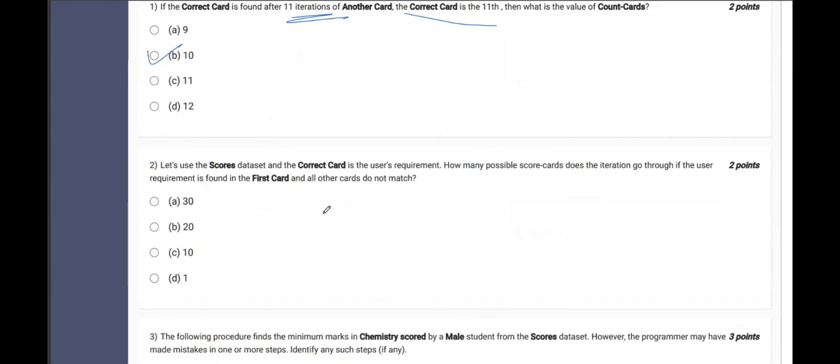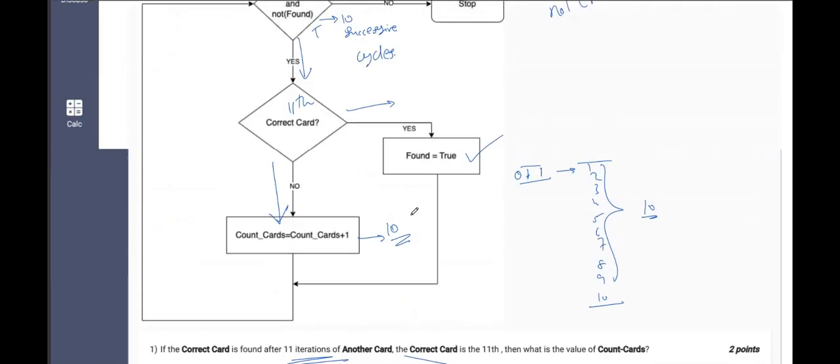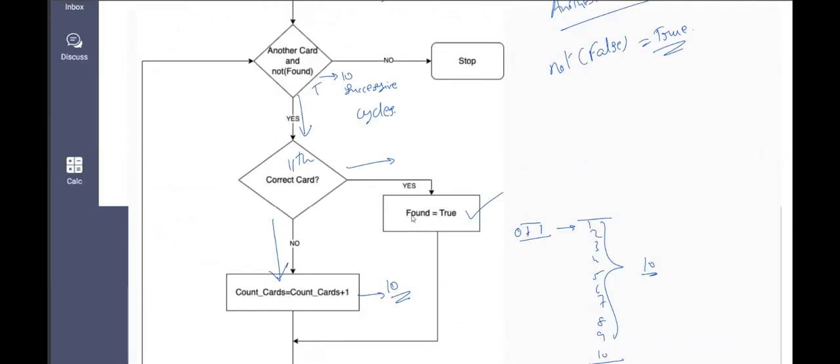Now, coming to the second question. Let us use the scores dataset and the correct card is the user's requirement. How many possible score cards does the iteration go through if the user requirement is found in the first card and all other cards do not match? If we observe the scores dataset, there are a total of 30 cards, right? The scores dataset has 30 cards in total. That means which start from 0 and end with 29. And picking up the correct card is what the user's requirement is. If the user requirement is found in the first card itself, this will be the correct branch. We will move on with the yes. And if it is the correct card, here it is not the 11th card, but the first card.